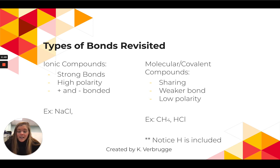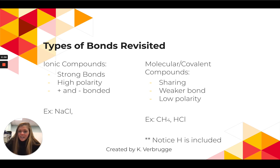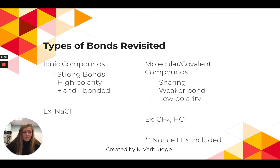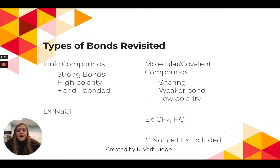So to summarize: ionic compounds are between a metal and a non-metal; a molecular compound is between two non-metals. There is also a metallic bond, which we won't discuss much — it's simply a bond between two metals. Hydrogen bonds also occur, but we're not going to cover those either.